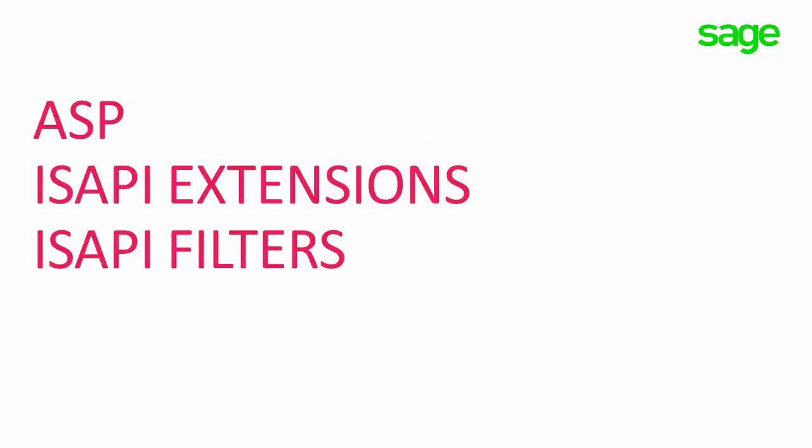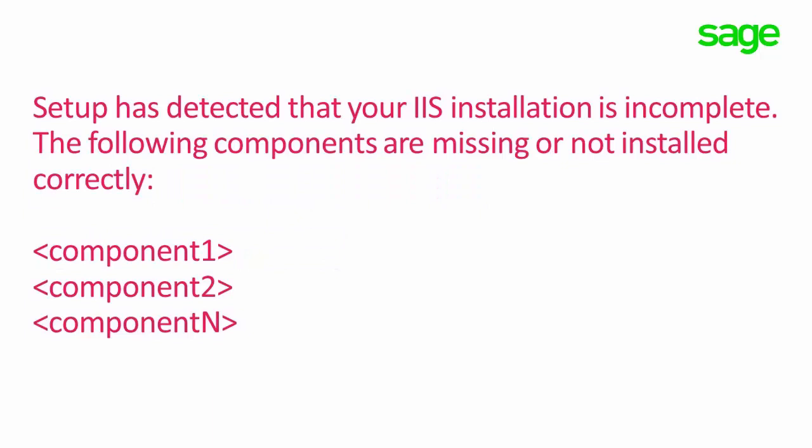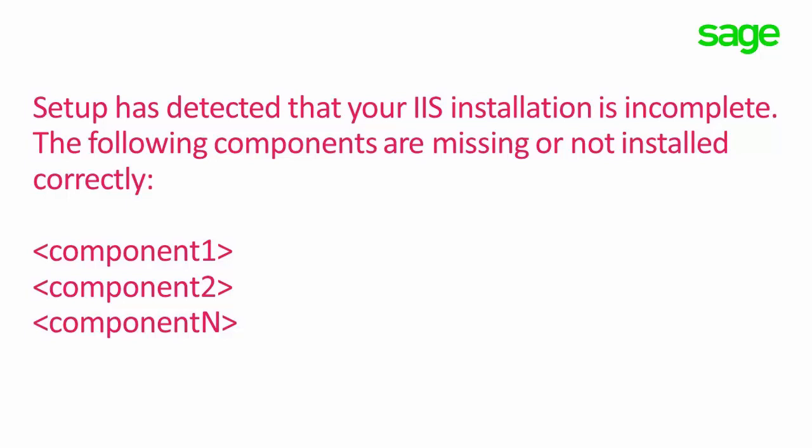For example, if you're installing on a system which has IIS 7 or later, it will check whether you have extensions installed on the web server which are necessary for SageCRM to function. These are for ASP pages, ISAPI extensions, and ISAPI filters. If it finds these are missing, it will display a message indicating that the IIS installation is incomplete and which components are missing. You can then check these are available within the server using the standard Windows behavior to turn Windows features on or off — this is an operating system function rather than something within the InstallShield for SageCRM.